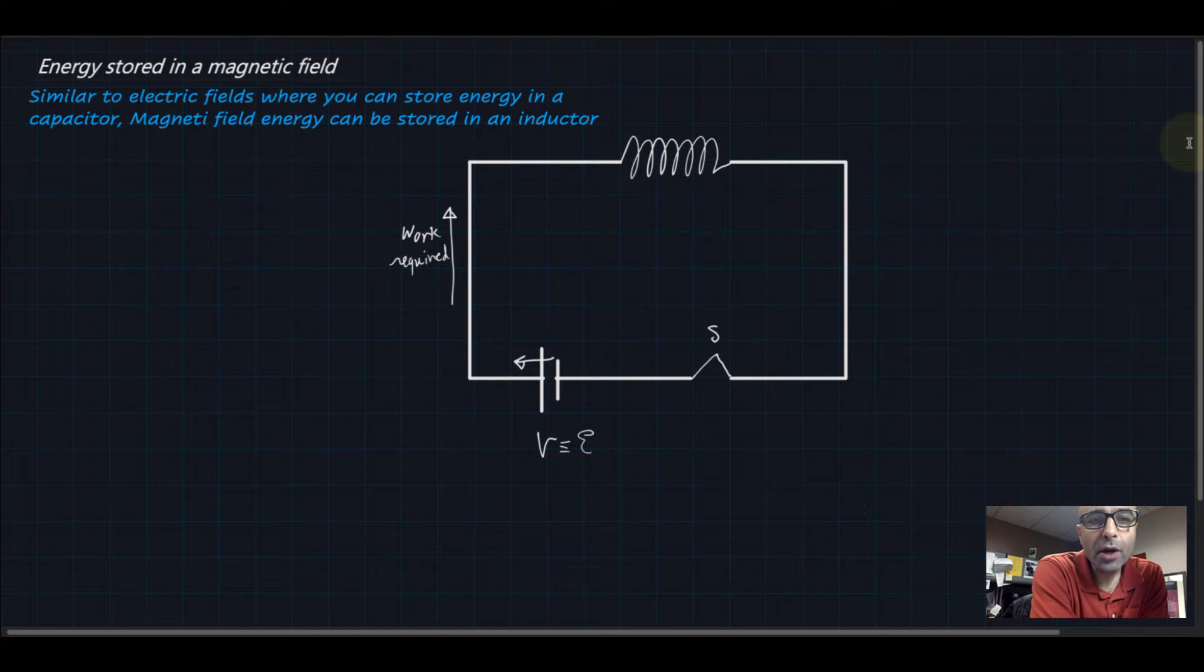Hello there everyone. We are going to talk about the energy stored in a magnetic field. In the past we have learned that capacitors, for example, can store electric field energy and we can tap into that energy whenever we need it later on after we charge a capacitor with an electric charge.